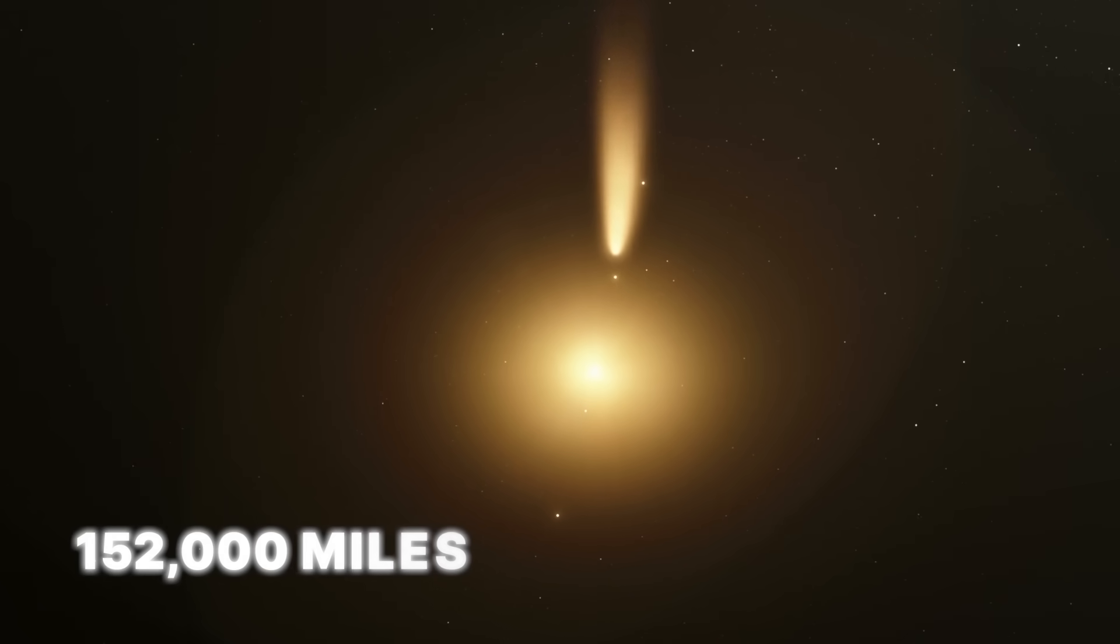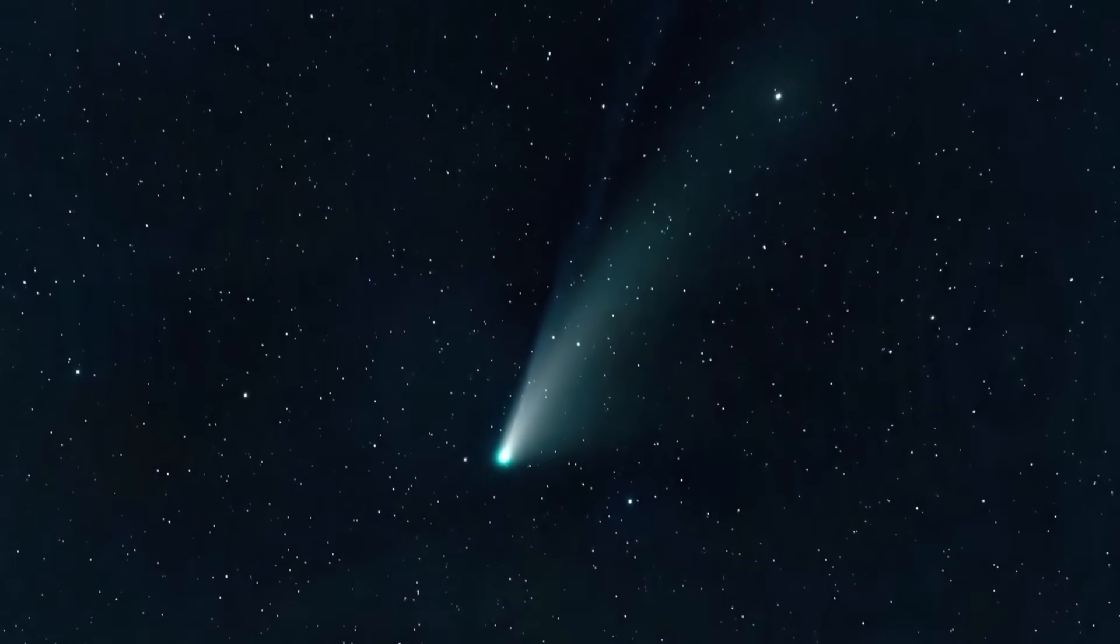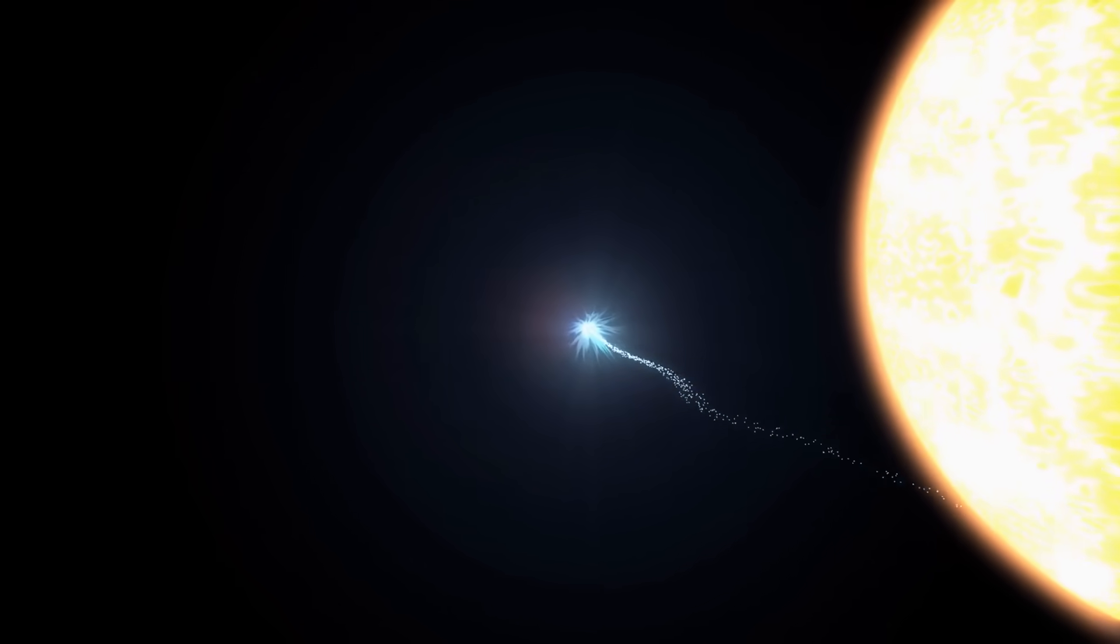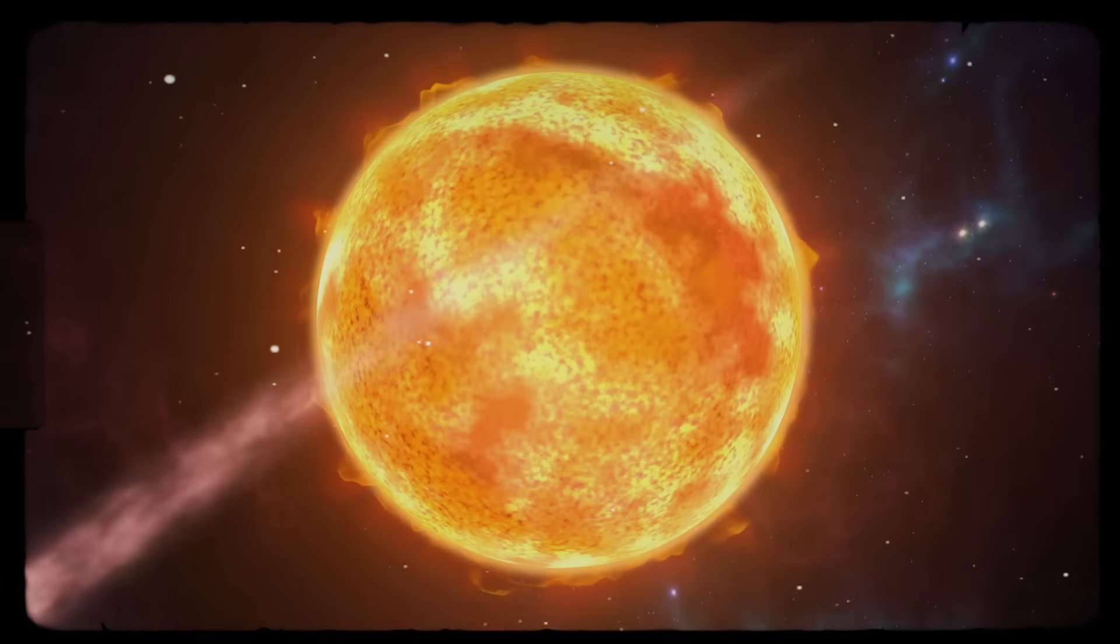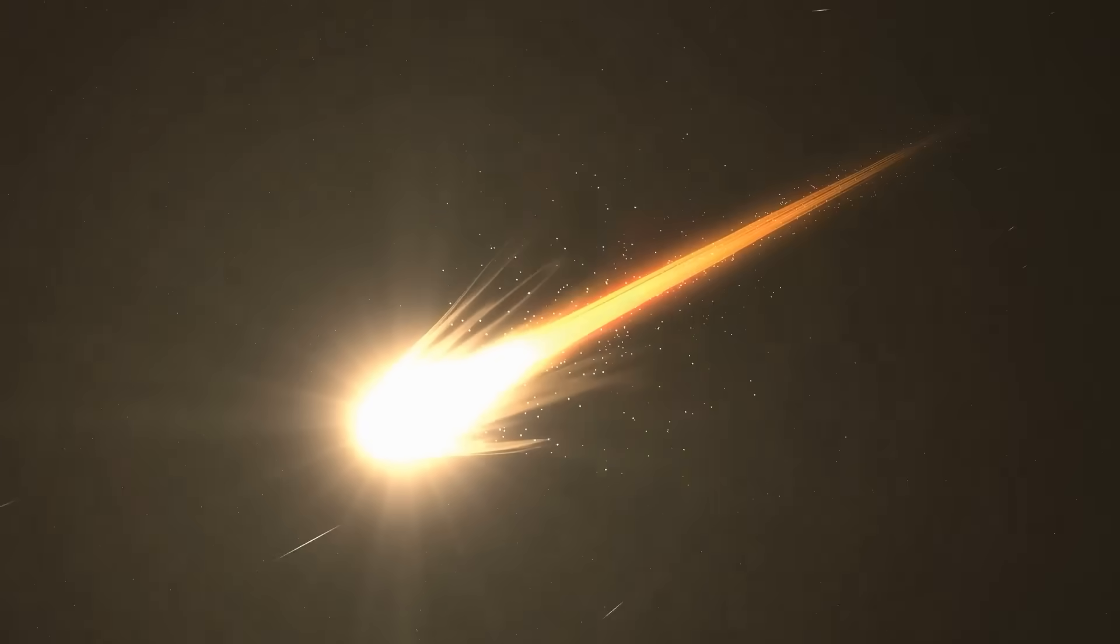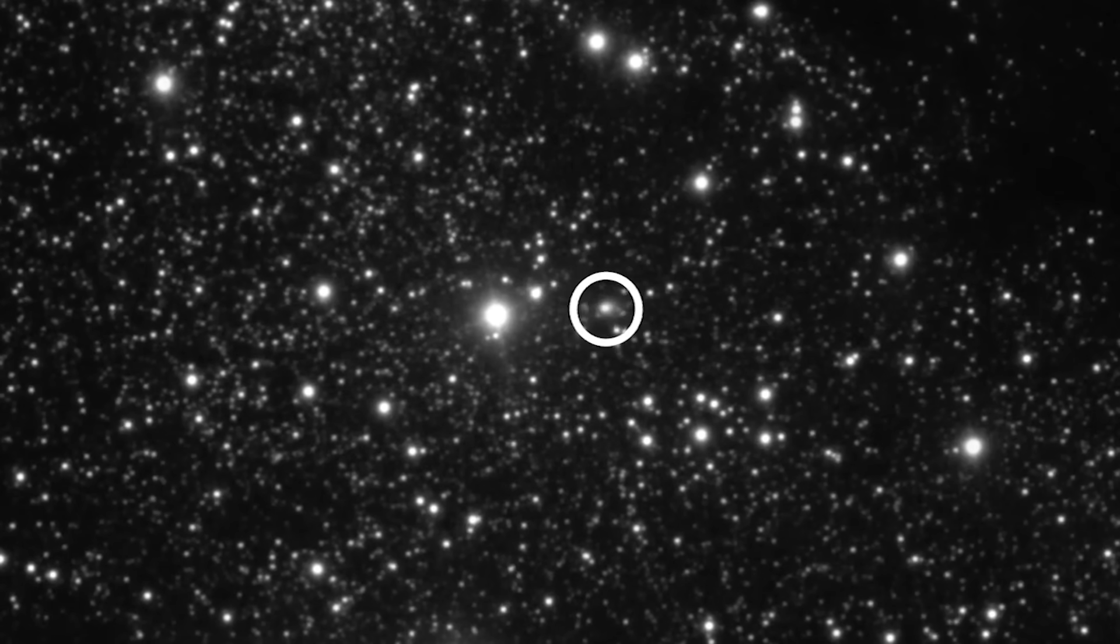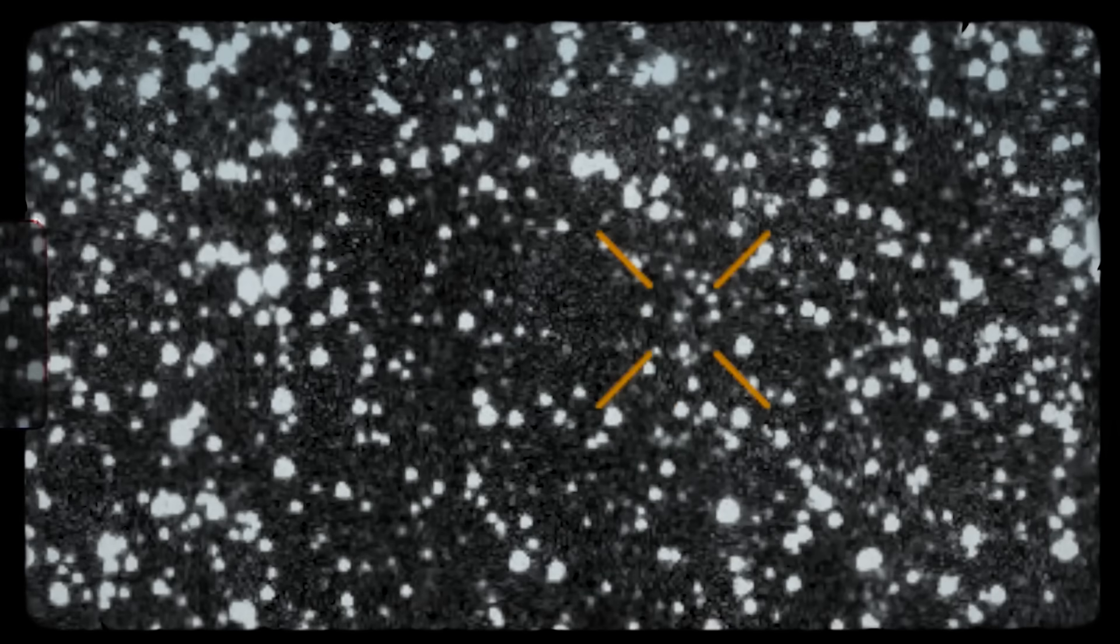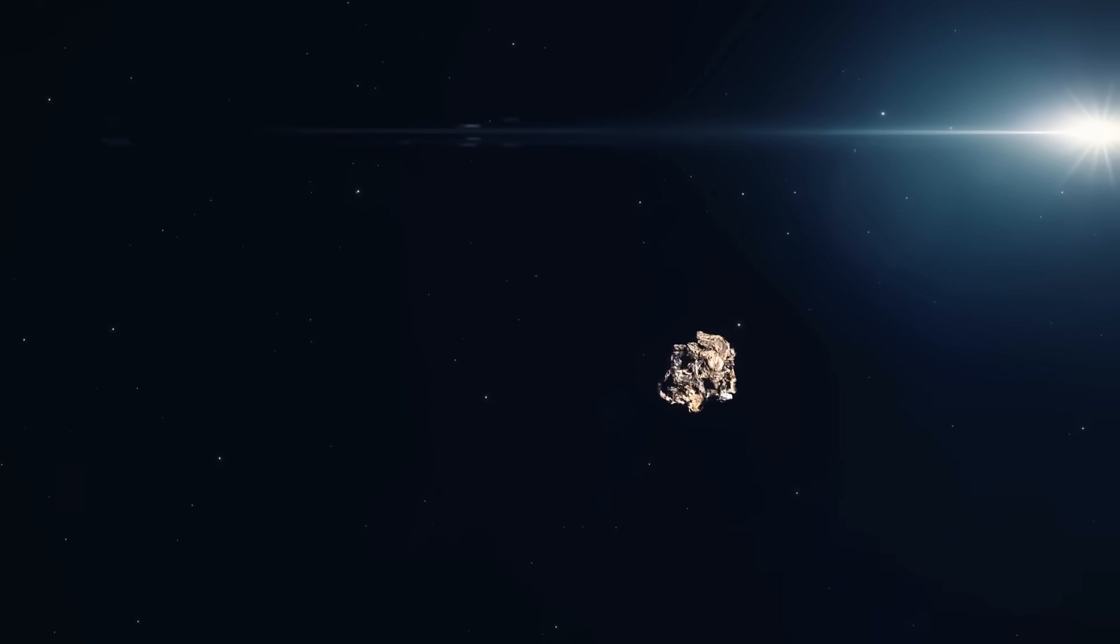Perhaps the most baffling feature of 3I Atlas is its tail. A comet's tail is formed by the solar wind pushing gas and dust away from it, so it always points away from the sun. But not all things are what they seem. 3I Atlas has a tail that appears to be pointing towards the sun. This is a complete violation of everything we know about comets. It's like seeing smoke blow directly into a fire. Add to that a weird nickel-to-iron ratio and the most extreme negative polarization curve ever recorded from any object in space, and the picture becomes clear. 3I Atlas is an anomaly. It's not a comet. It's not a typical asteroid. It's something else. And it's getting closer every second.